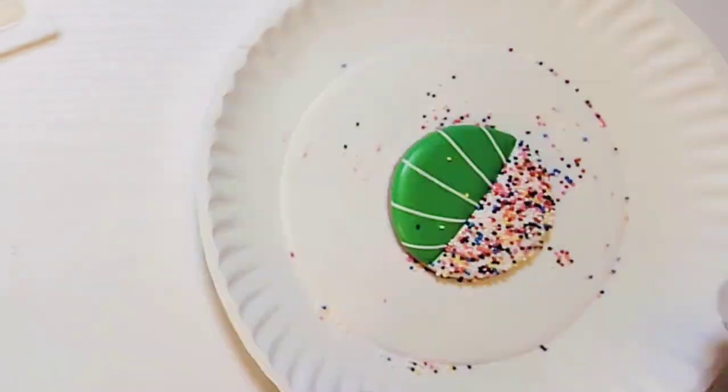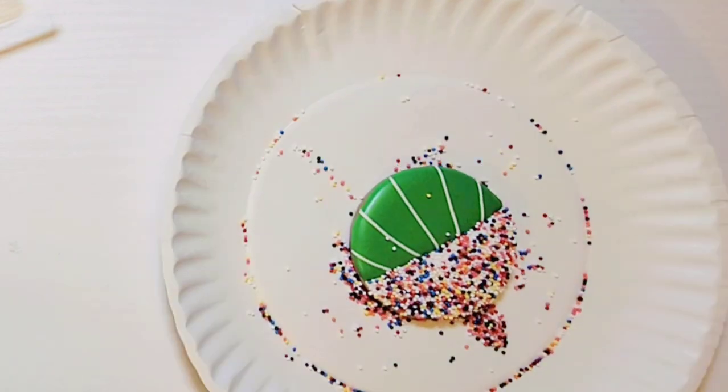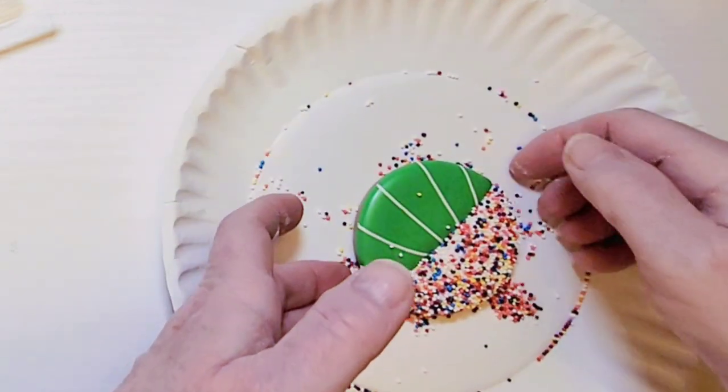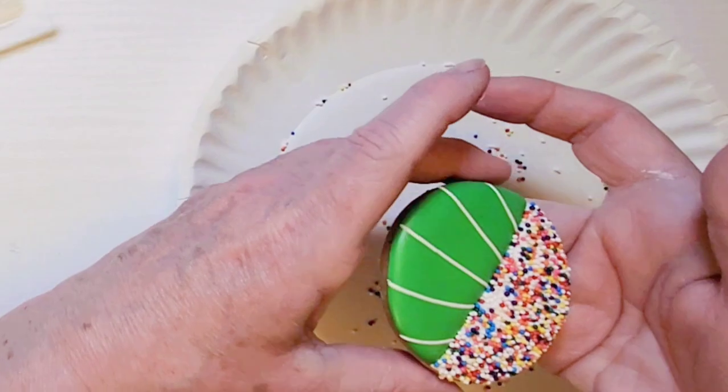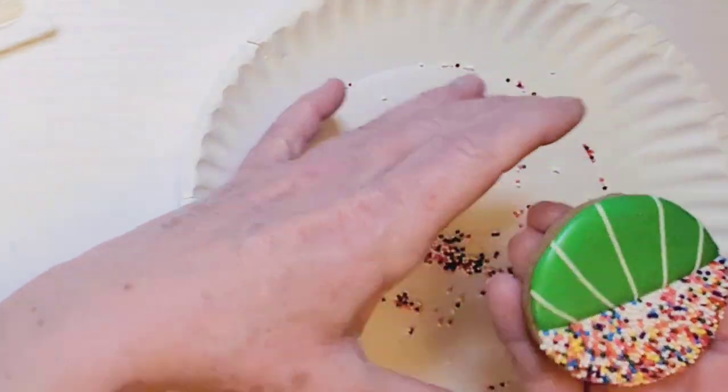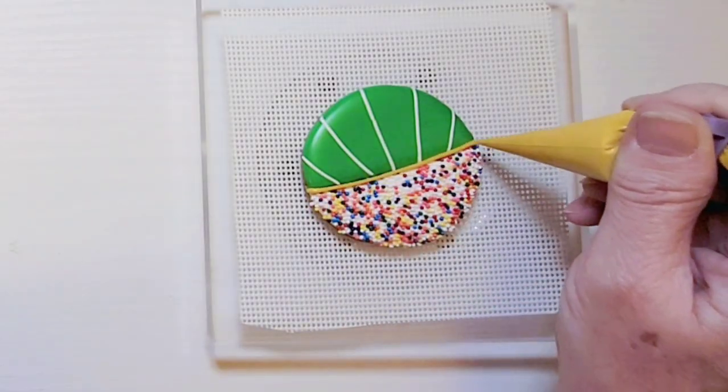Put the cookie over a paper plate and cover it with sprinkles and shake off the excess. You can then take those extra sprinkles and put them right back in the sprinkle jar. Using sprinkles in your team colors would be a great idea.